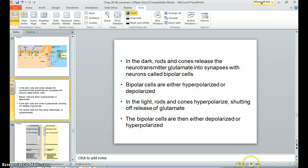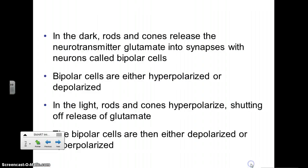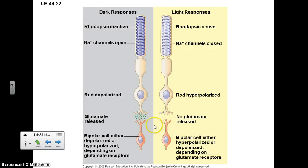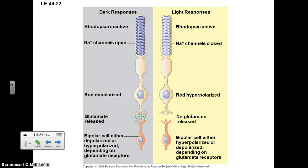We were talking about vision and the retina — the photoreceptors that are sensitive to light. In the dark, these cells, the rods and cones, are depolarized and they release glutamate, which is a signal to the bipolar cells indicating it is relatively dark. When light is shown upon them, they become hyperpolarized and no glutamate is released.